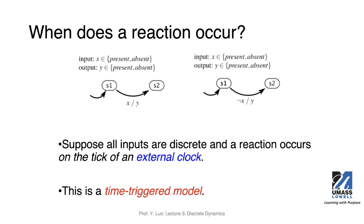Now we assume differently: all inputs are discrete and a reaction occurs on the tick of an external clock. Although not drawn, we assume there's an external clock that gives ticks at certain intervals based on the clock period. In this case we say this is a time-triggered model, because the reaction will occur every clock tick. No matter what the input signal is — present or absent — this condition, this guard, will be evaluated on every clock tick, whether on the rising or falling edge.